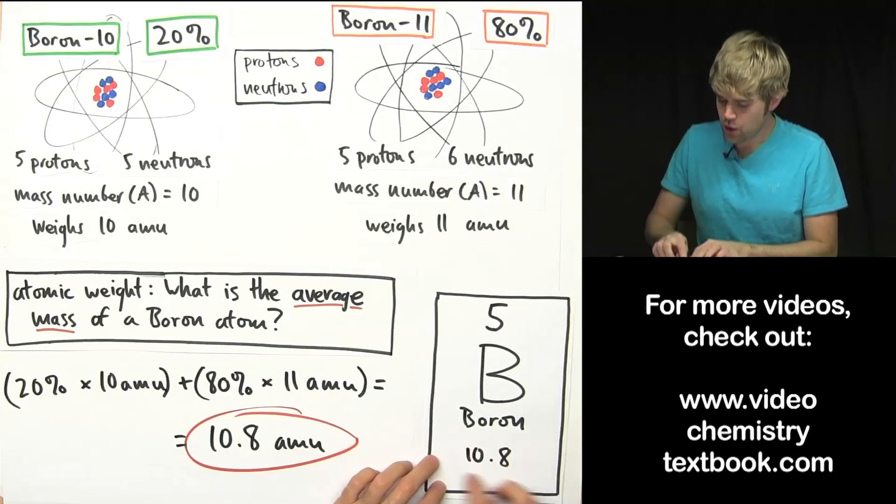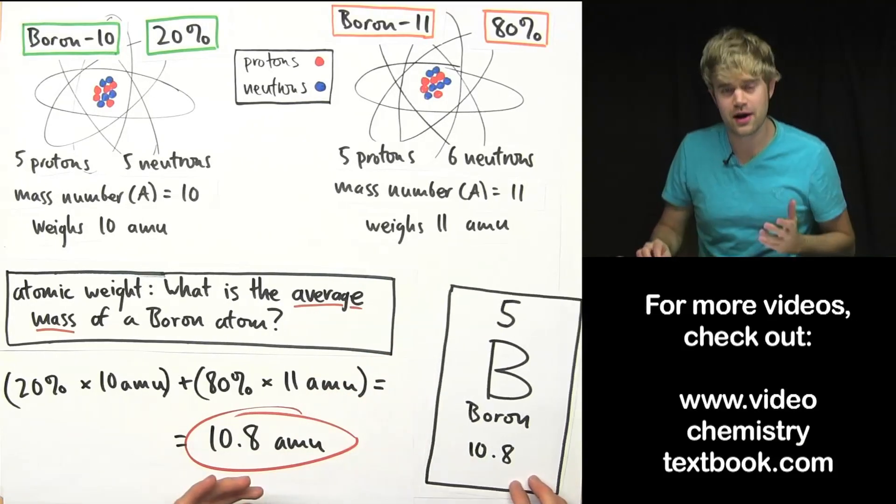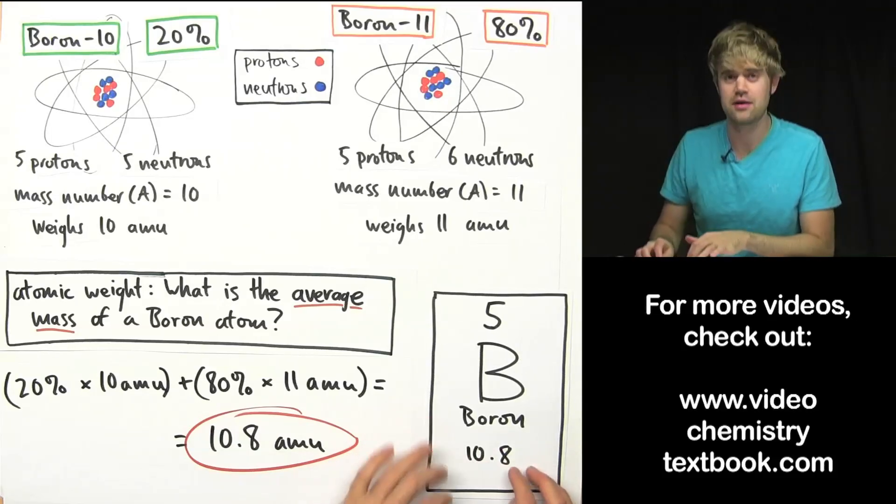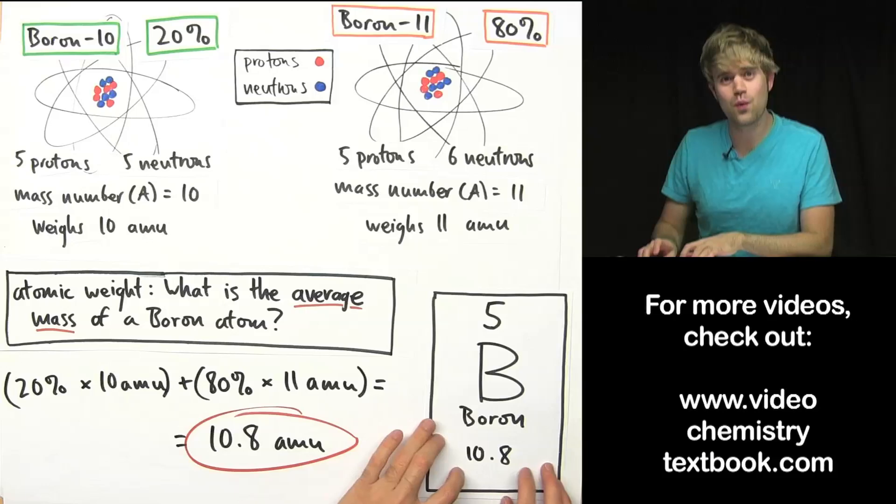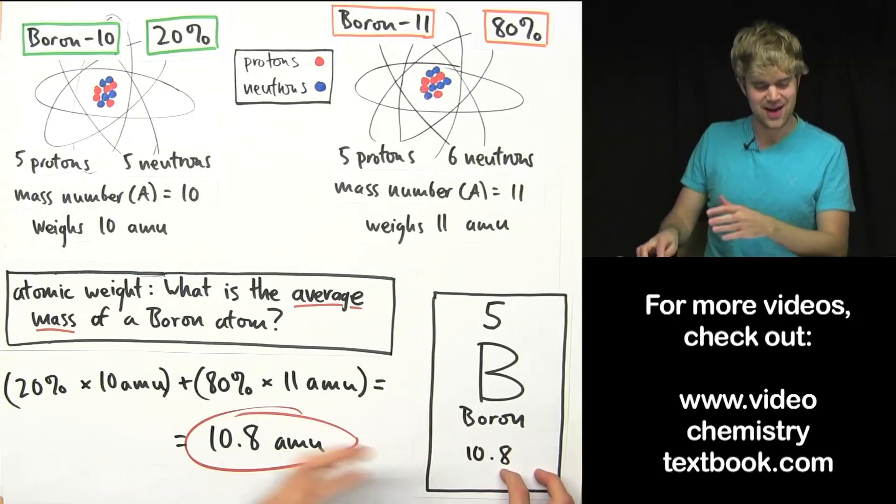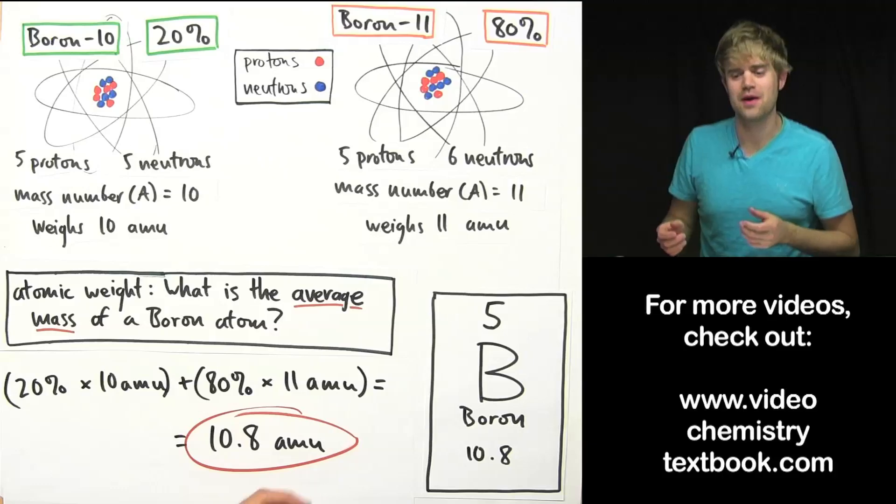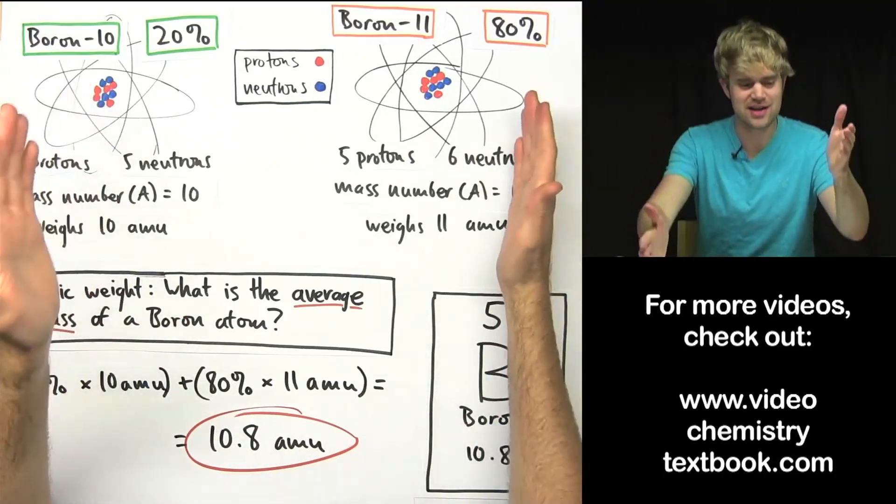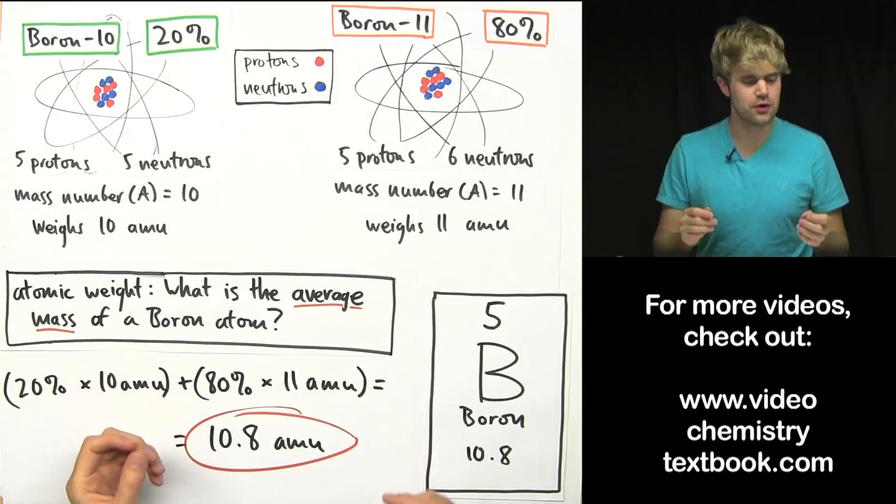Now you know what this number is here at the bottom of these elements on the periodic table. 10.8, this isn't a mass number, this is an atomic weight. This tells you the average mass of a boron atom based on the fact that there are different amounts of the different isotopes. So just to review,